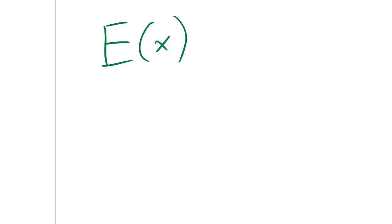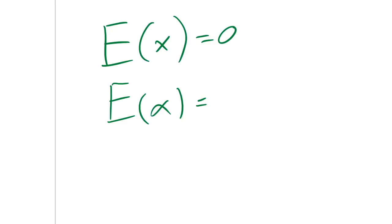The first thing you need to know are energy functions, or energy-based models. An energy function, sometimes called E, is simply a function with one or multiple inputs, let's call them x. If the energy function is happy with x, it will output zero. And if the energy function is not happy with x, it will be a high value, larger than zero. We can formulate almost any machine learning problem in terms of an energy function.